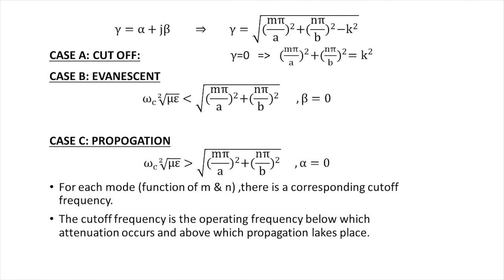By substituting kx and ky, we obtain the propagation constant. We have three possibilities depending on k, m, and n. Cutoff: gamma equals to zero. The value of omega that causes this is called the cutoff angular frequency. The cutoff angular frequency is the operating frequency below which attenuation occurs and above which propagation takes place.